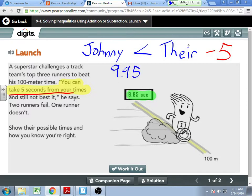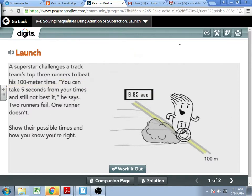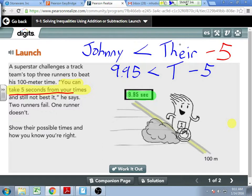9.95, that's his time, is less than their time. I don't like using T, but if I do, I use capital T, minus the five. What would I do to solve for what their time must be for Johnny's statement to be true? Brennan? Which side is my variable on? So what I want to do is look at the right side. I want to get this by itself.